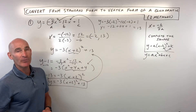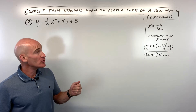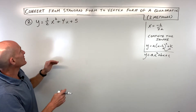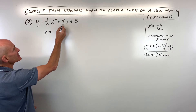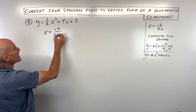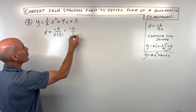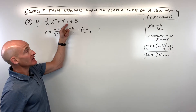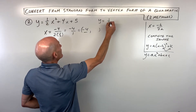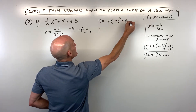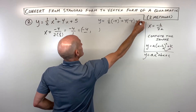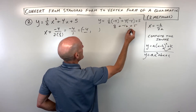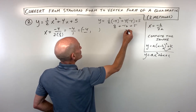Let's look at another example. See if you can do this next problem on your own using both methods. Using negative b over 2a, the x-coordinate of the vertex is negative 4 over 2 times one-half, which comes out to negative 4 over 1, which is negative 4. To find the y-coordinate, we plug it back in: one-half times negative 4 squared plus 4 times negative 4 plus 5. That's 16 times one-half is 8, plus negative 16, plus 5 — which gives negative 8 plus 5, which is negative 3.